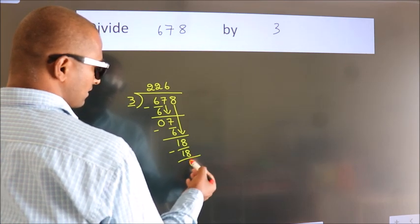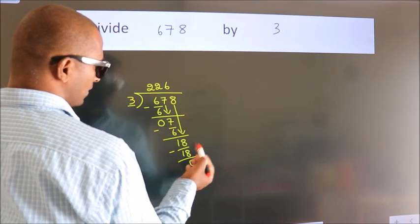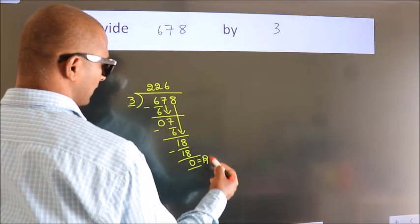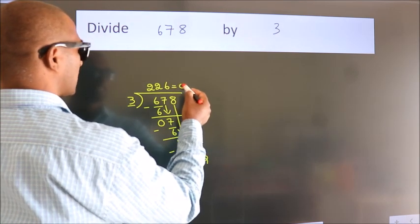After this, no more numbers to bring it down. So we stop here. This is our remainder. This is our quotient.